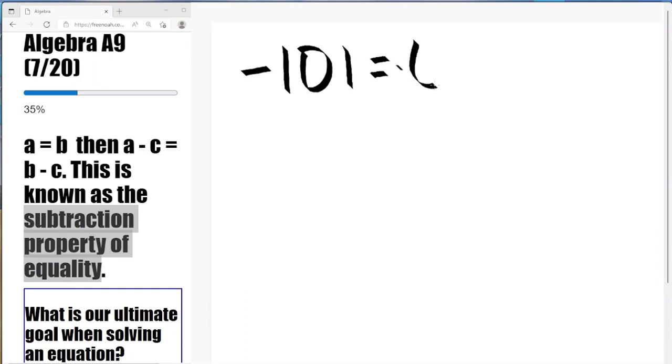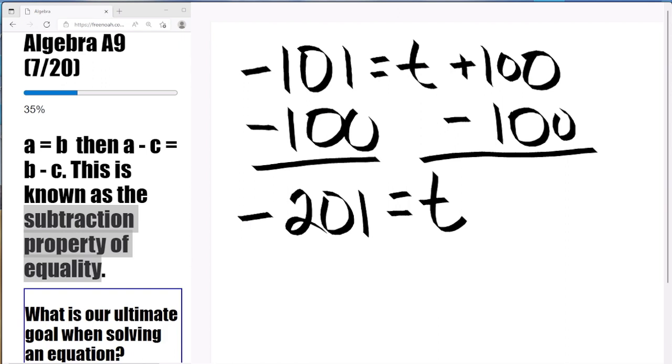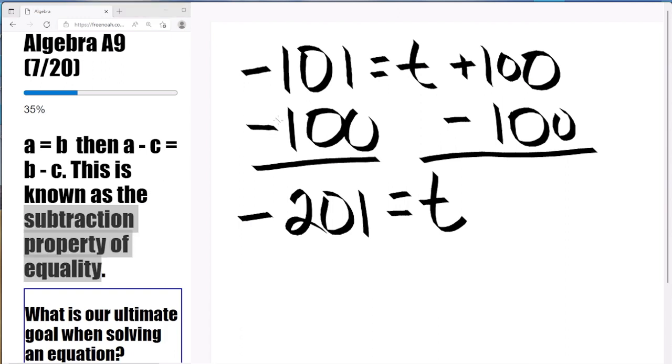Negative 101 equals T plus 100. Well, first thing we're going to do is we're going to subtract 100 on both sides, in order to isolate the T. Now the T is by itself because 100 minus 100 is 0. And now we subtract the 100 on the left side which gives us negative 201. So T equals negative 201.